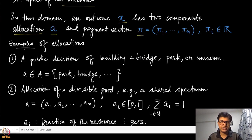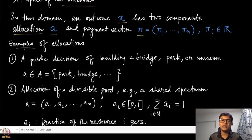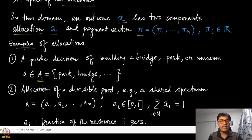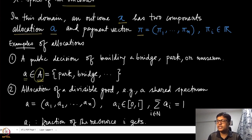What are examples of allocations? The allocation could be something like a public decision. For instance, a municipal corporation is trying to decide whether to build a bridge, a park, or a museum. In that case, the set of all possible allocations — which we denote capital A in a mechanism design setup — would contain elements like park, bridge, and so on.